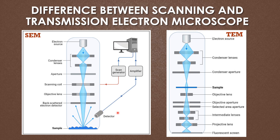The final image in the SEM is observed on the PC screen, while in the transmission electron microscope the final image is observed on the fluorescent screen. These are the major and basic differences between the scanning electron microscope and the transmission electron microscope.